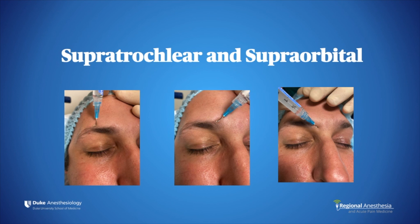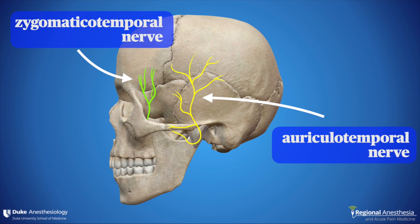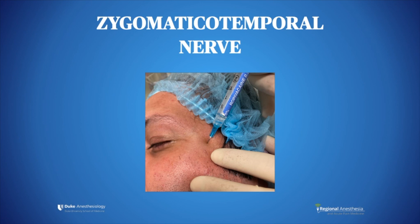The zygomaticotemporal nerve innervates the small area of the forehead and temporal area. To block this nerve, slide a one-and-a-half inch needle behind the concave portion of the lateral orbital rim. Place the index finger in the depression of the posterior lateral aspect of the lateral orbital rim and place the needle posteriorly to the finger.